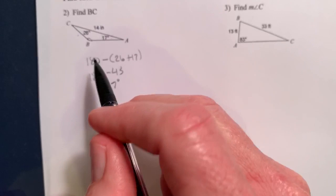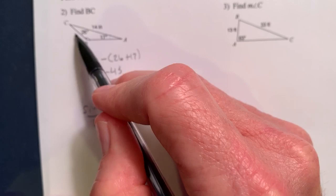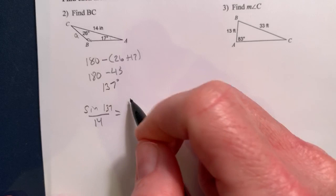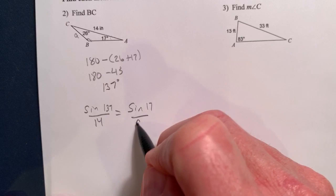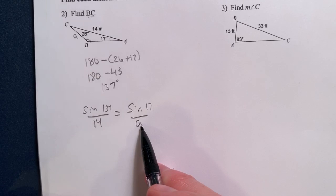So we're going to go sine of 137 over the length of the side opposite that equals, and then I want to find this, and here's my vertex A, so this is little a. So that would be sine of 17 over lowercase a. Remember that lowercase a right now is the length of BC. So I have, these are all numbers, and I have one variable.